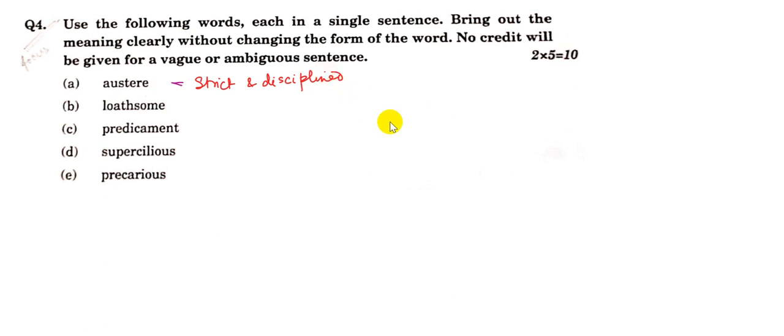So Austere means strict and disciplined. A sentence with Austere could be: the monks lead an Austere and Spartan life.